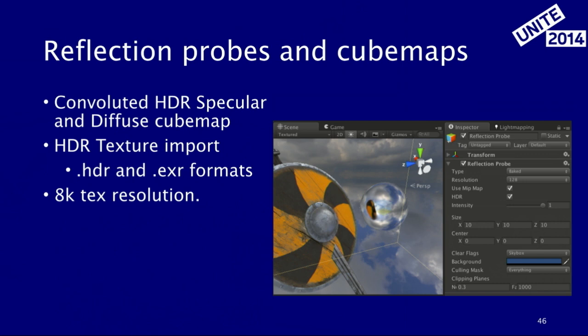The reflection probes and cube maps are convoluted HDR specular and diffuse cube maps that are generated or baked as you go along. We have an HDR texture import that also supports EXR files, and we now have an 8K maximum texture resolution that will give you higher definition on your skies and cube maps.